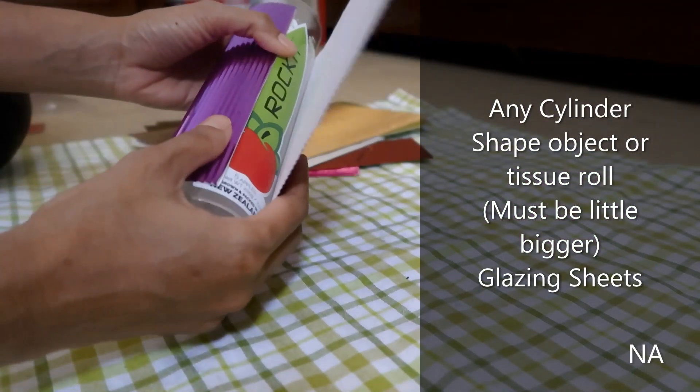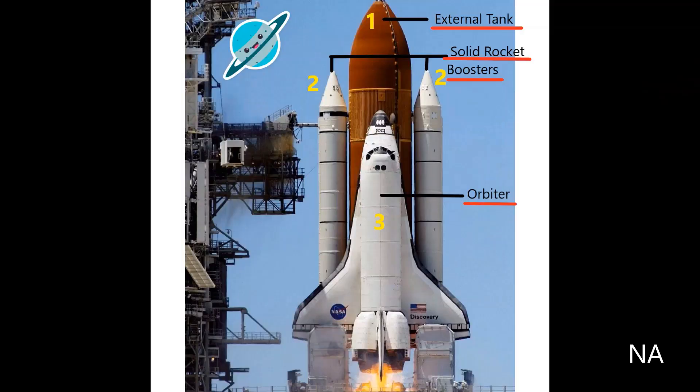And then we need any cylinder shape object. Now before starting, just a few glimpses onto the parts of our space shuttle so it's easy for us to make. Space shuttle has three main parts: number one is the external tank, that is the orange big tank; number two is the two solid rocket boosters on both sides of the external tank; and the third one is the orbiter that looks like a plane.